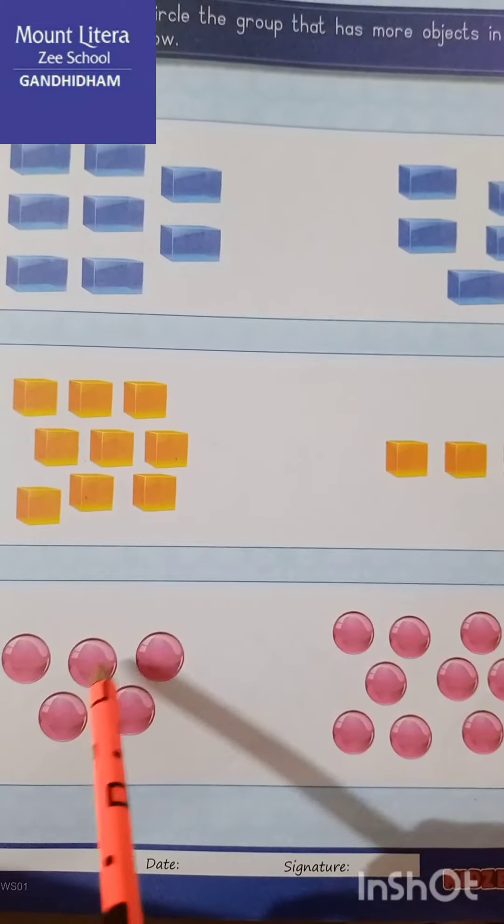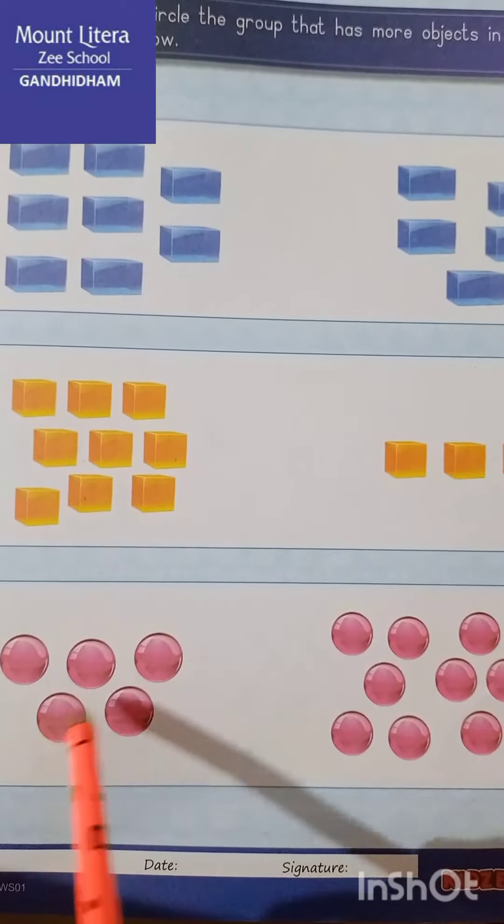1, 2, 3, 4, 5, 6, 7, 8, 9, 10. Means this group has 5 balls and this group has 10 balls. So,